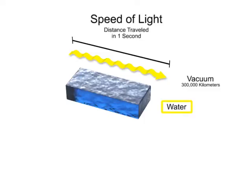In water, light travels at about 75% of its speed in a vacuum, or 225,000 km per second.